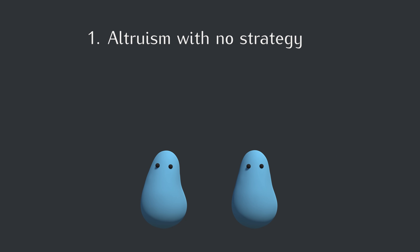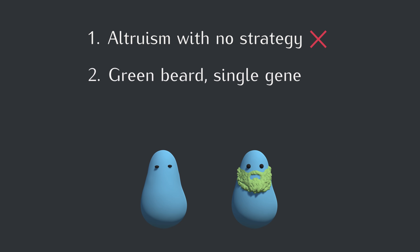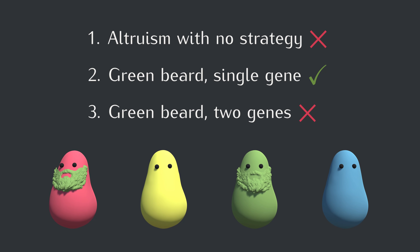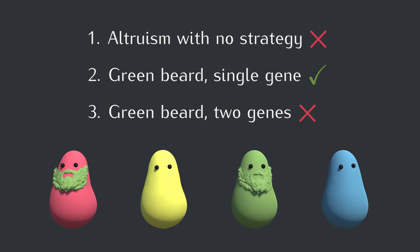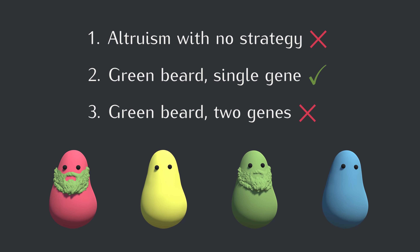Those are all the systems we're going to look at in this video. I actually find what we've seen so far to be a bit discouraging for making sense of altruism, especially in humans. We only found one type that worked at all, and it turned out to be really fragile in theory and rare in reality. But don't despair — we have a few more models to explore that are a bit more encouraging. In the next video, we'll talk about kin selection, which follows Hamilton's rule.